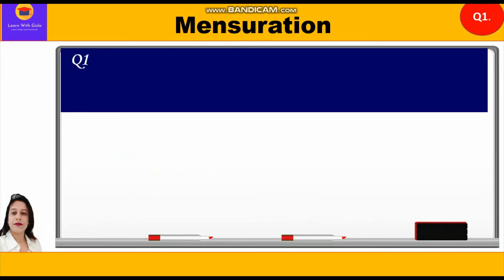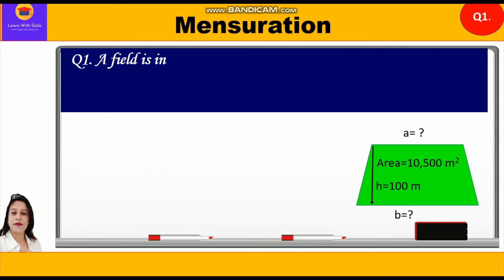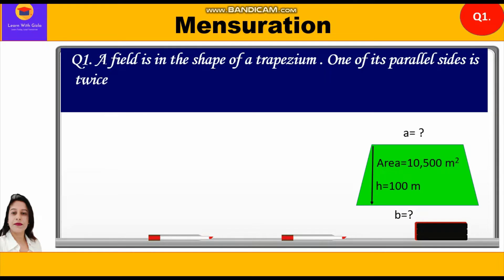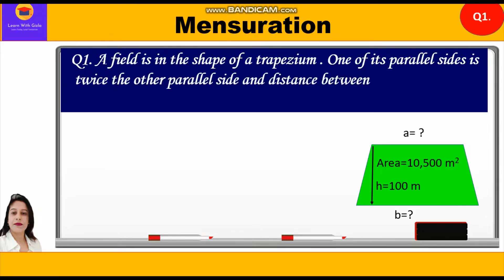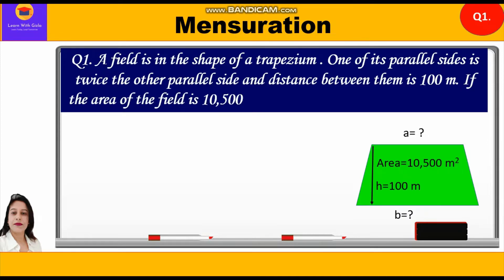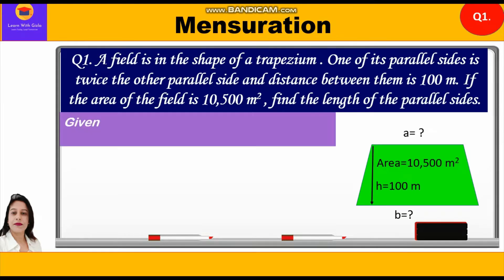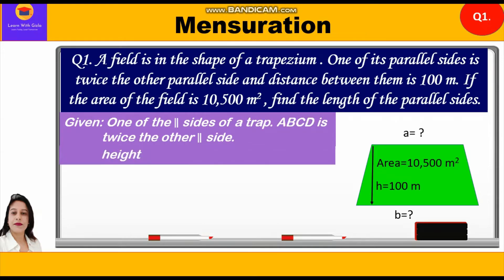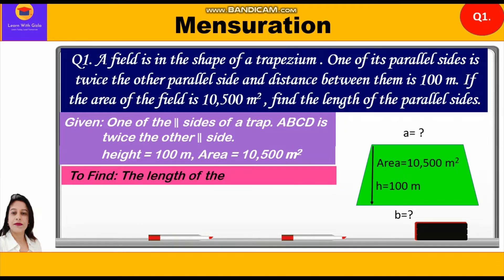Now let's take up question number one. A field is in the shape of a trapezium. One of its parallel sides is twice the other parallel side and the distance between them is 100 meters. If the area of the field is 10,500 meters square, find the length of the parallel sides. So given: one parallel side is twice the other, height is equal to 100 meters, and area is equal to 10,500 meters square.